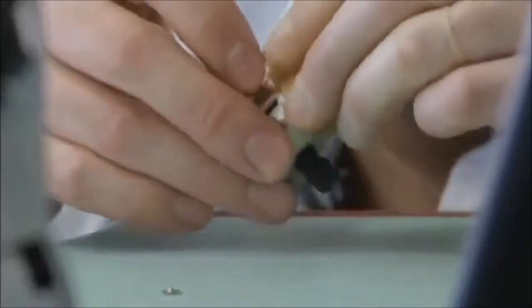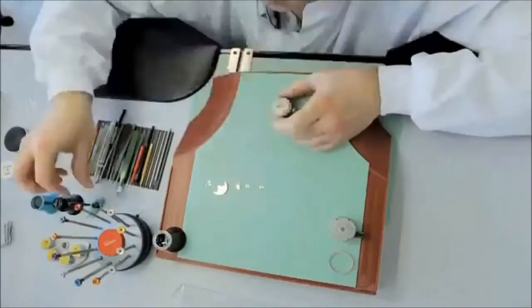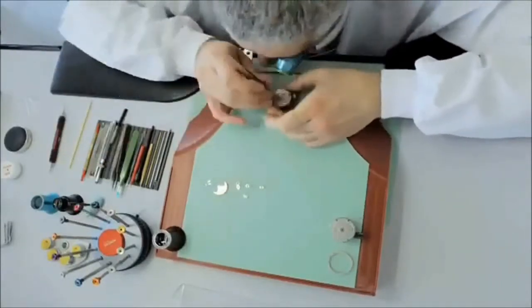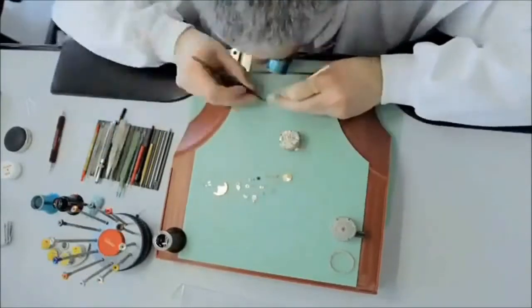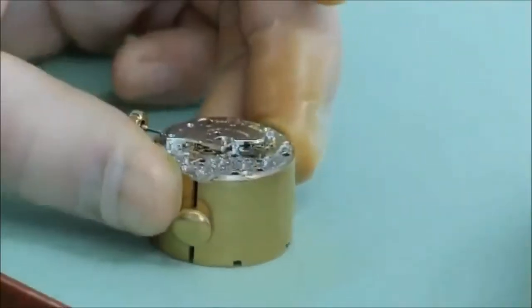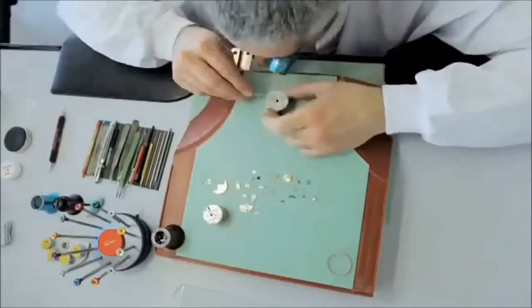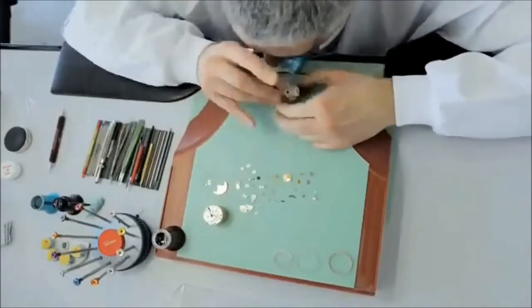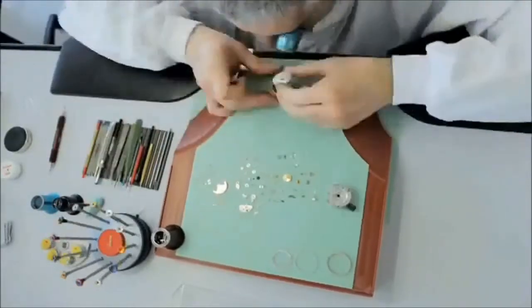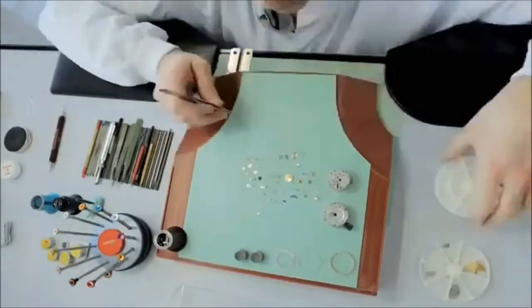In the workshop, the watchmaker begins the one-and-a-half-hour-long process of dismantling the watch's movement. Every component is assessed to determine its condition. Depending on the timepiece, a watch movement from the contemporary collection will contain between 100 and 350 individual parts.